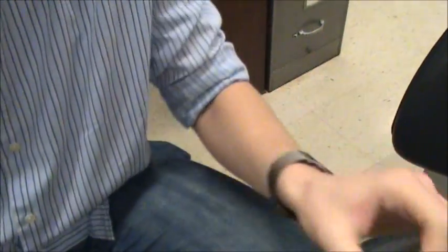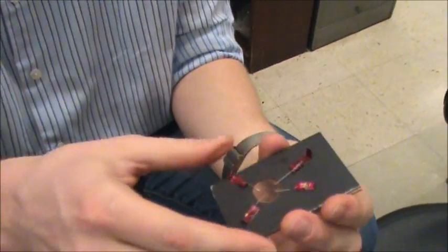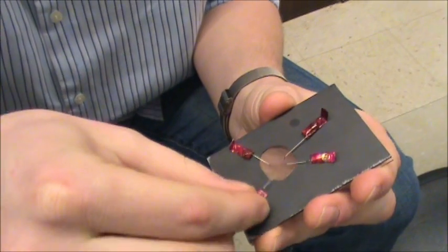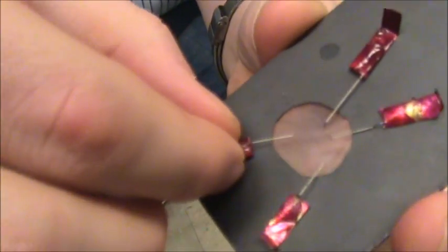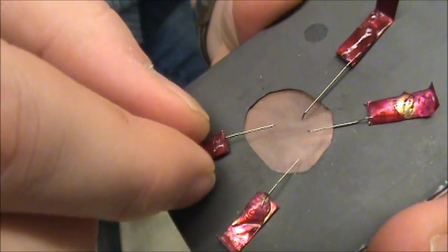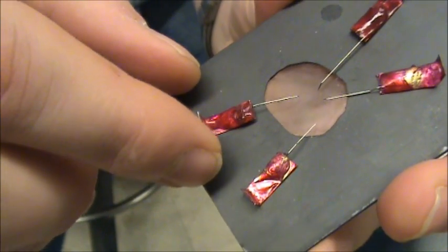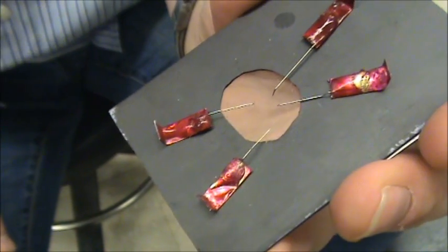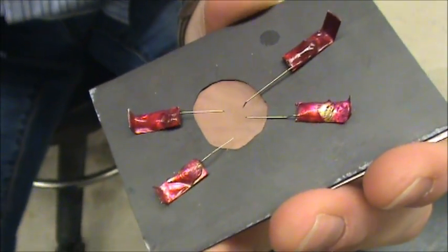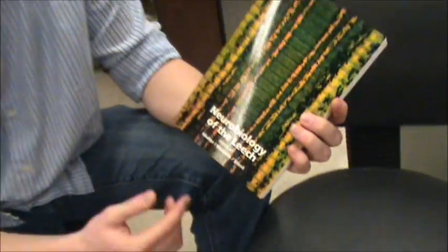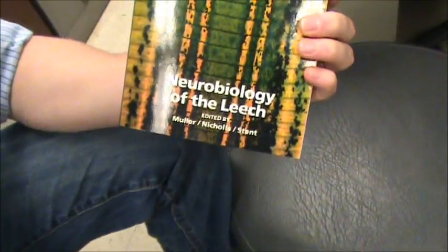When we pin out the leech ganglion we can either use the silgard dish with pins, or we can use these magnetic trays with the sliding pins that were originally designed for leech but the drosophila folks have stolen and not given credit to the leech community. Some of the experts in the leech field have written this book, Neurobiology of the Leech.